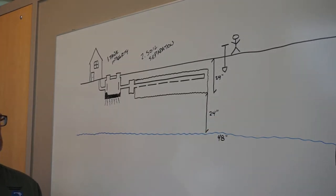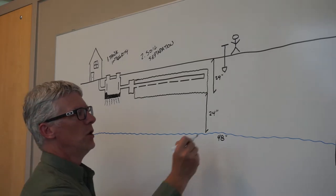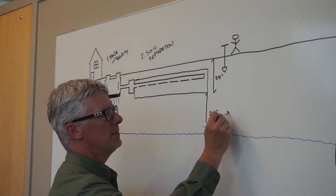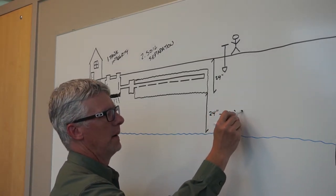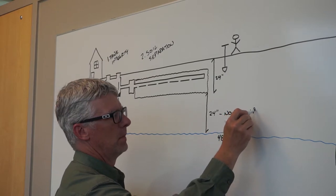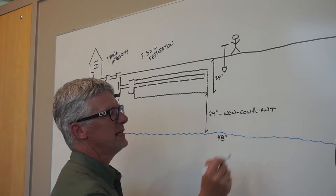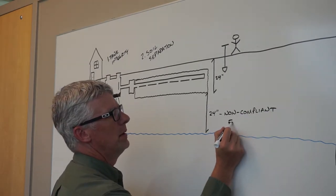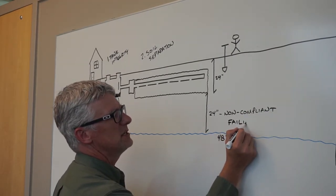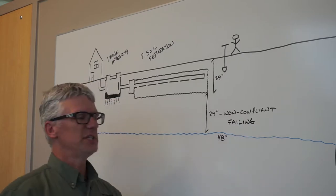So now this system, if this were the case, would be deemed non-compliant. It would also be called a failing system because the system is failing to protect groundwater.